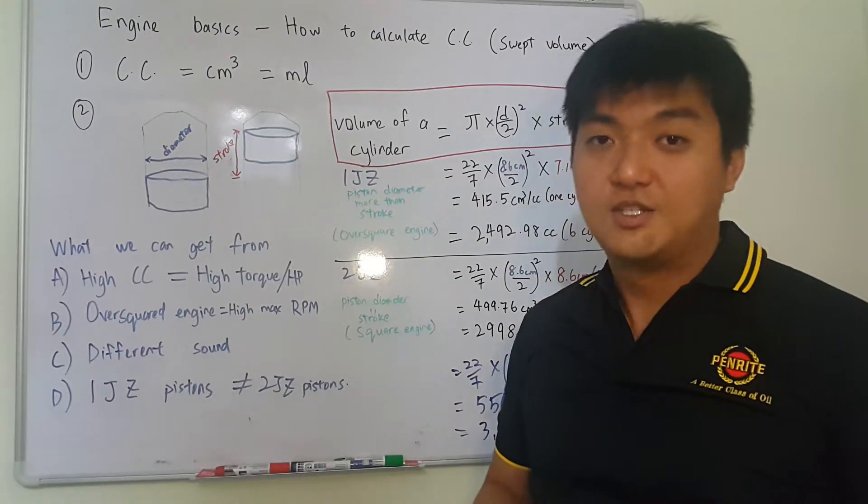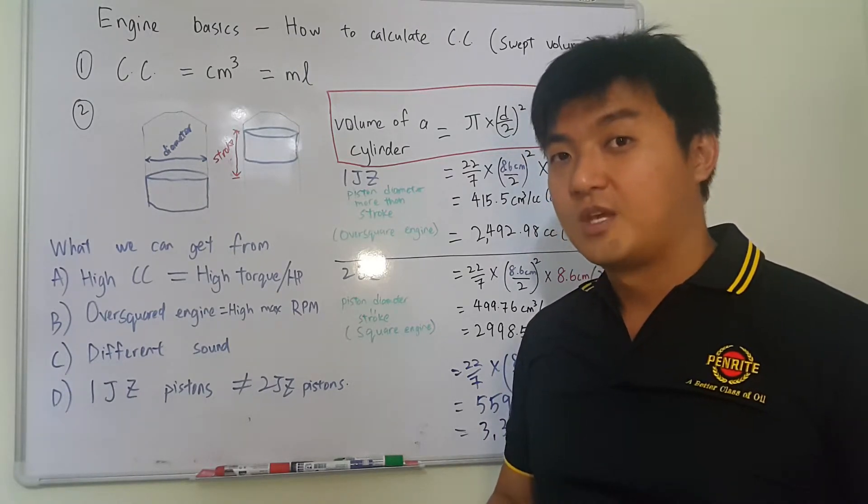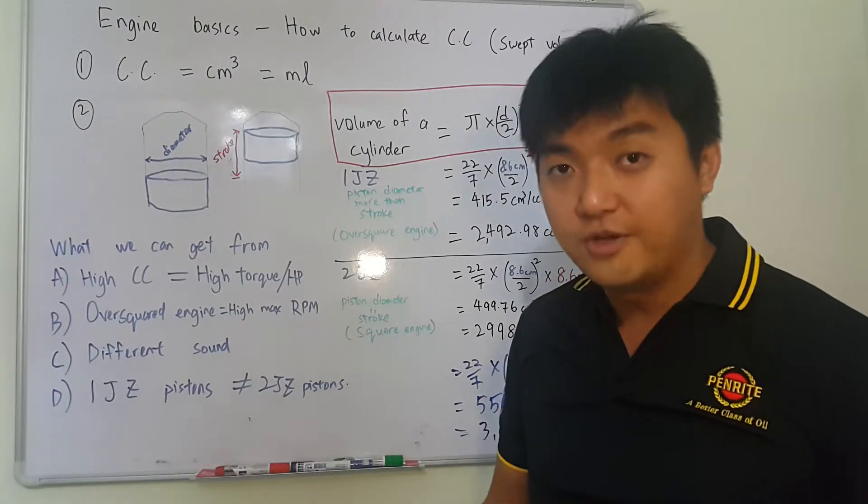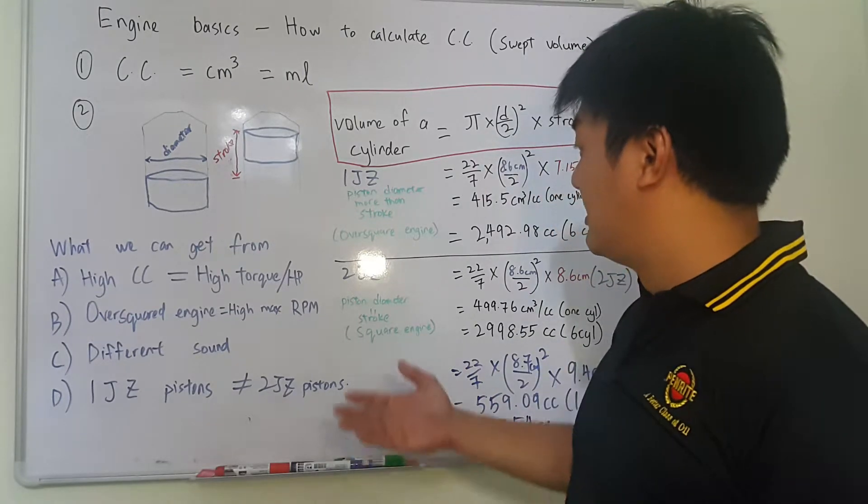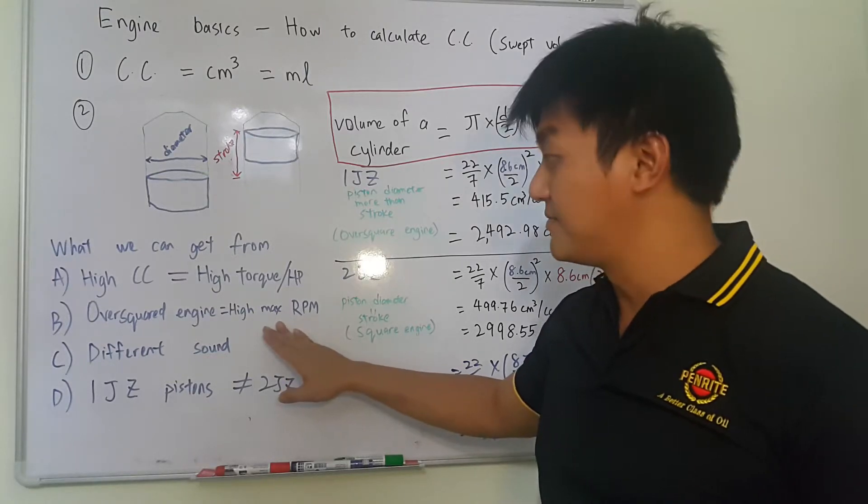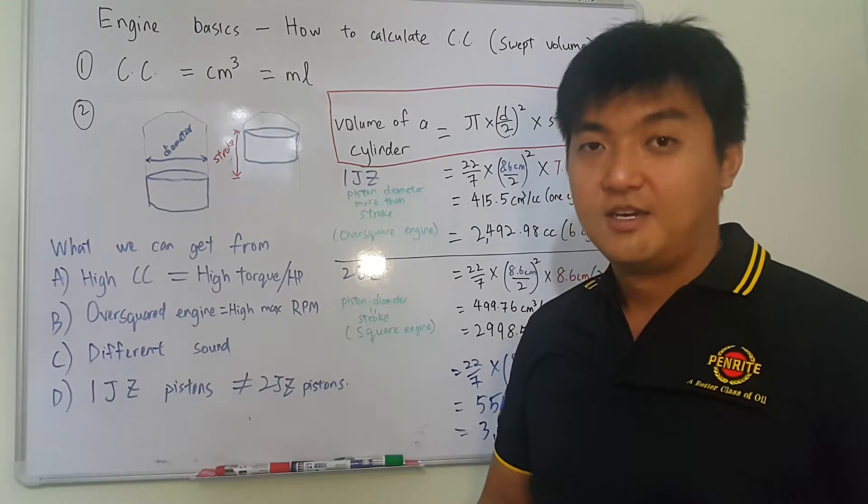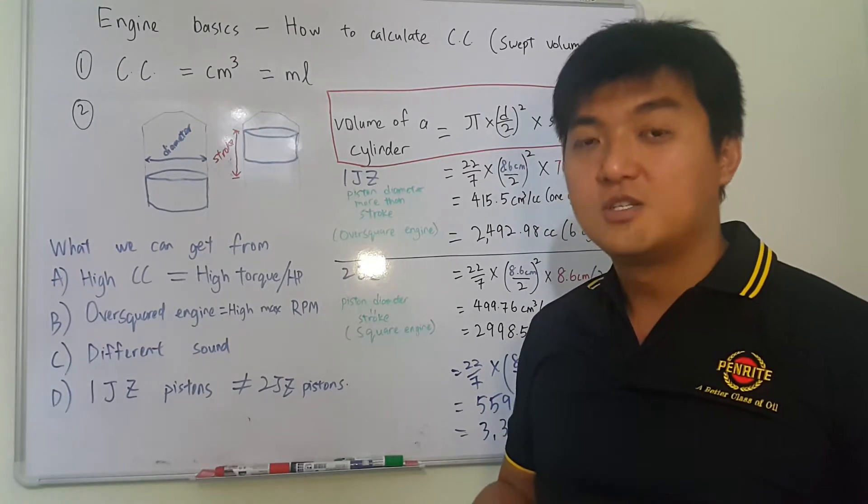In certain applications such as drift, we want to have very high RPM, so that we can keep on pushing the car to continue to drift. So the over square engine is very favorable in this situation. Okay, you know engine such as Ferrari, they all have over square engines.